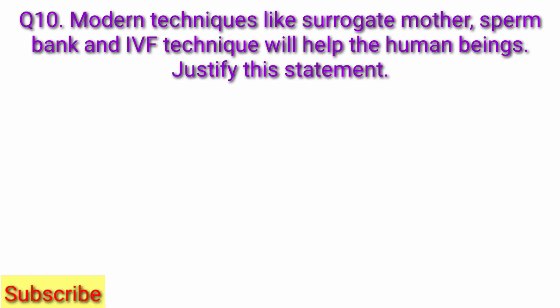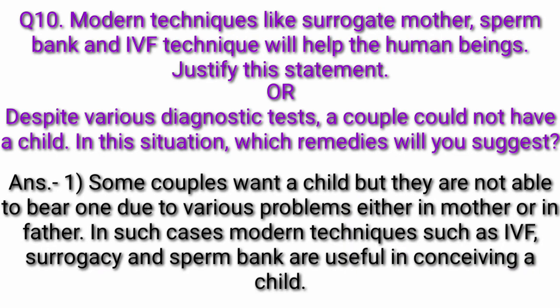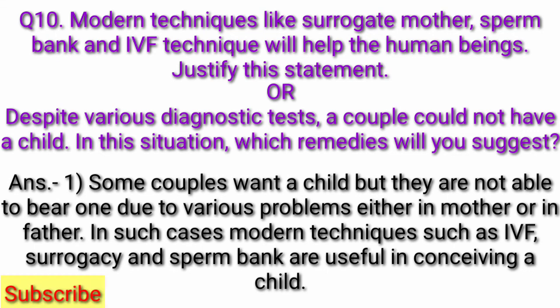Question 10: Modern techniques like surrogate mother, sperm bank, and IVF will help human beings — justify this statement. Or: Despite various diagnostic tests, a couple could not have a child — which remedies will you suggest? Answer: Some couples want a child but are not able to bear one due to various problems in either the mother or the father. In such cases, modern techniques such as IVF, surrogacy, and sperm bank are useful in conceiving a child.